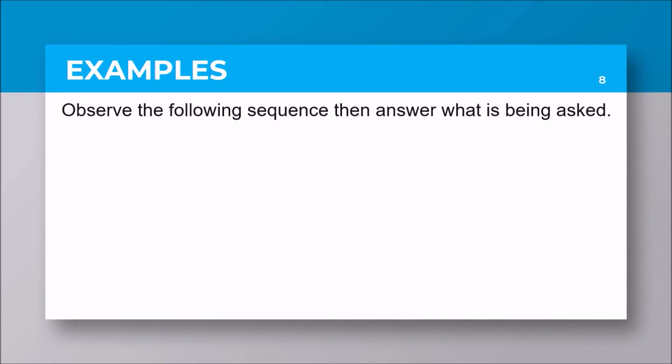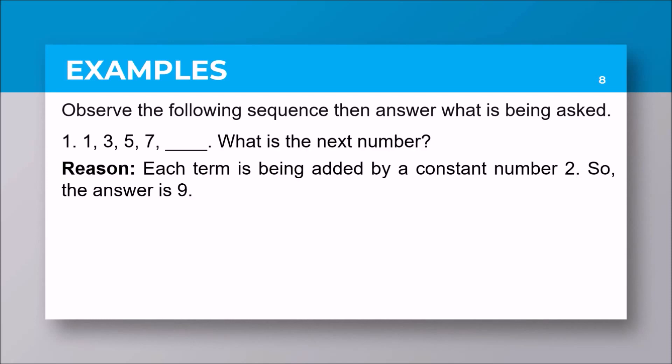Observe the following sequences, then answer what is being asked. Number one: 1, 3, 5, 7, blank. What is the next number? Observing the pattern, each term is being added by a constant number 2, so therefore the answer for number one is 9.